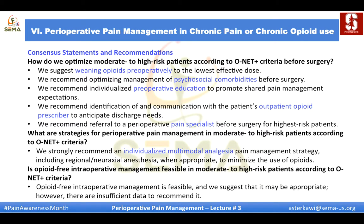To optimize moderate-to-high-risk patients according to ONET criteria before surgery: first, wean opioids preoperatively to the lowest effective dose; second, optimize and manage psychosocial comorbidities before surgery; third, individualize preoperative education to promote shared pain management expectations; fourth, identify and communicate with the patient's outpatient opioid prescriber to anticipate discharge needs; and fifth, refer to a perioperative pain specialist before surgery for the highest-risk patients.